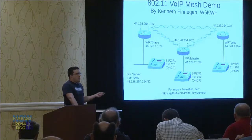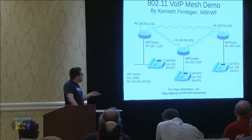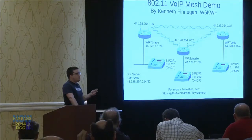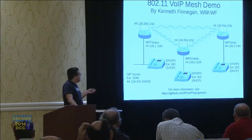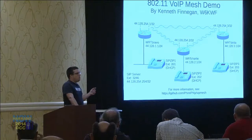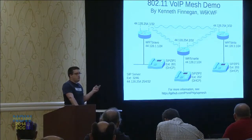The dial plan in Asterisk is phenomenally flexible — you don't have to map single extensions to single phones. You can map an extension to ring every phone in the network. In my demo I actually have a conference call set up, so if you dial H-A-M, or 426, it puts you into a conference room where you can have as many of these telephones talking to each other as you like.